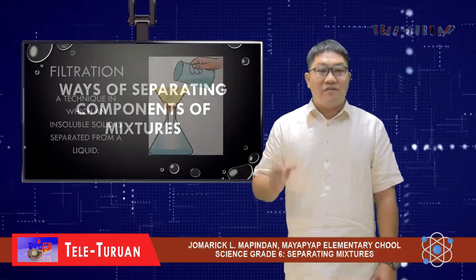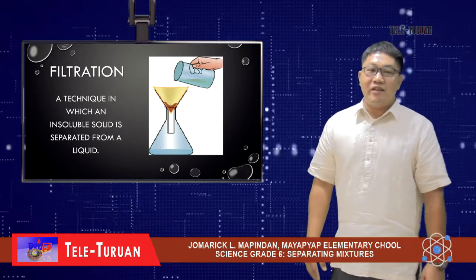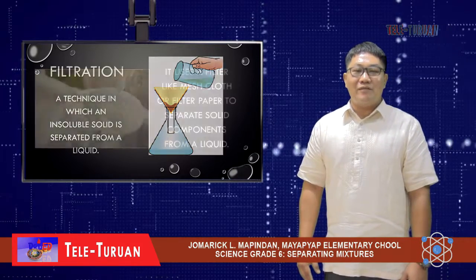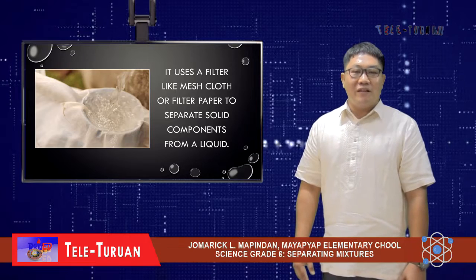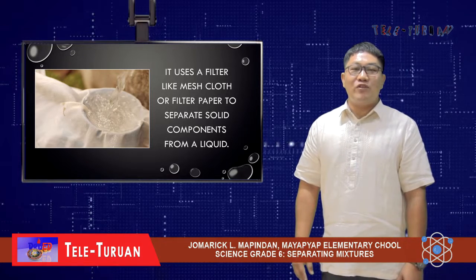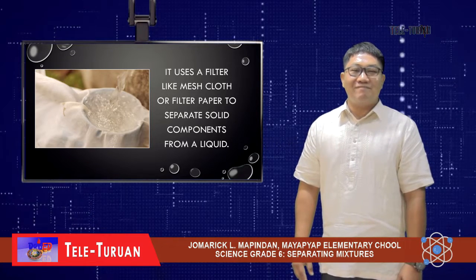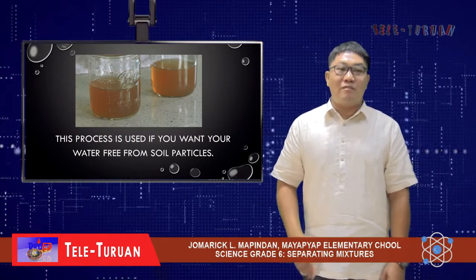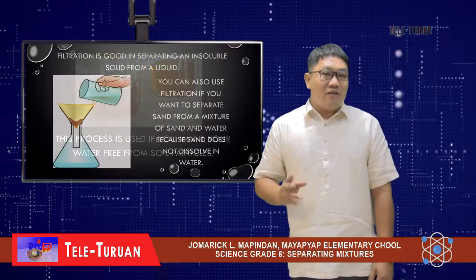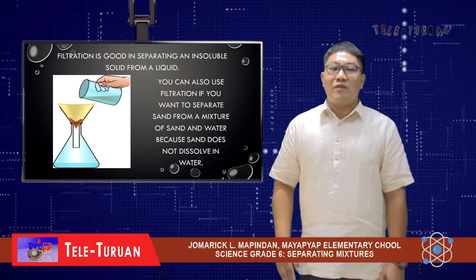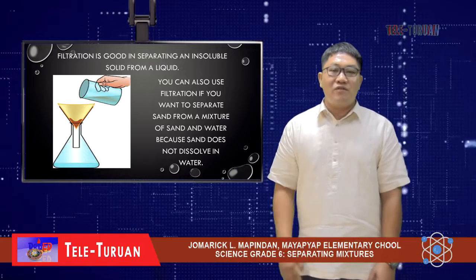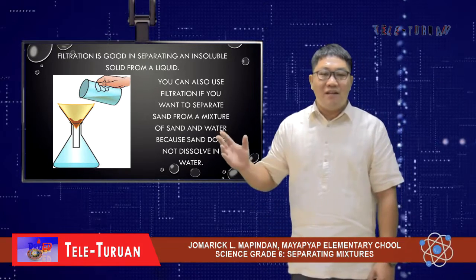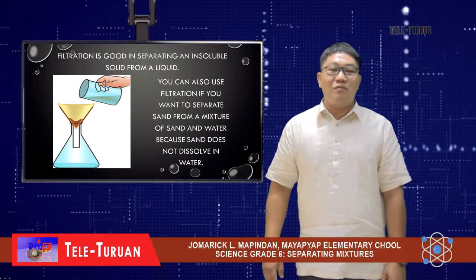First, we have filtration. Filtration is a technique in which insoluble solids are separated from a liquid. It uses a filter-like mesh cloth or filter paper to separate solid components from a liquid. This process is used if you want your water free from soil particles. Filtration is good at separating an insoluble solid from a liquid — you can also use filtration to separate sand from a mixture of sand and water, because sand does not dissolve in water.